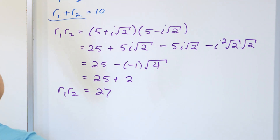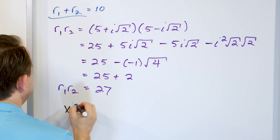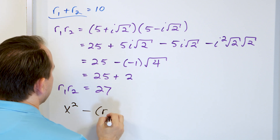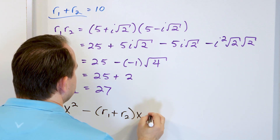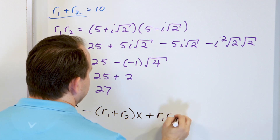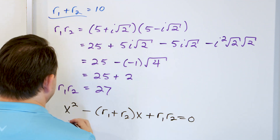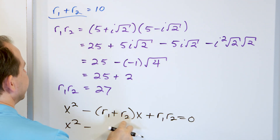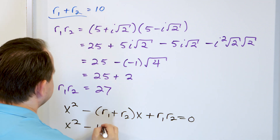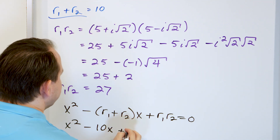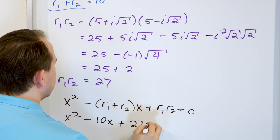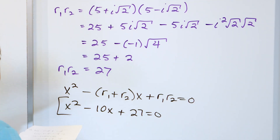With those numbers in place, plug into x squared minus (r1 plus r2)·x plus r1·r2 equals 0. The sum of the roots came out to 10, giving 10x, and the product came out to 27. So x squared minus 10x plus 27 equals 0.